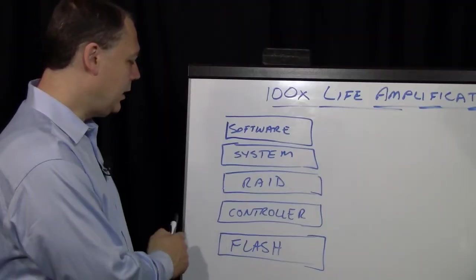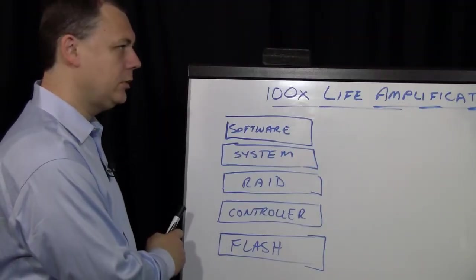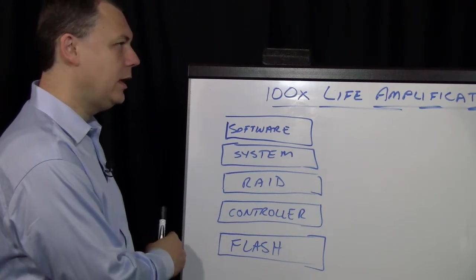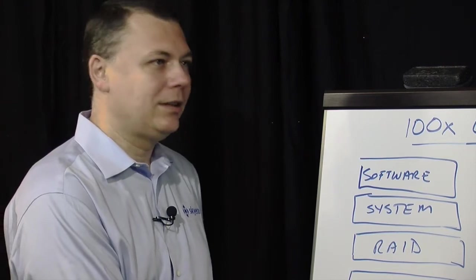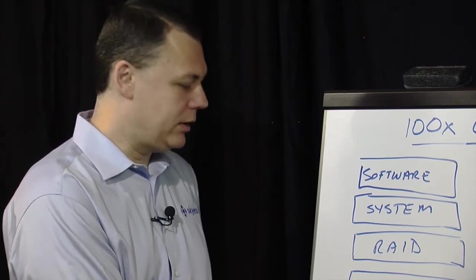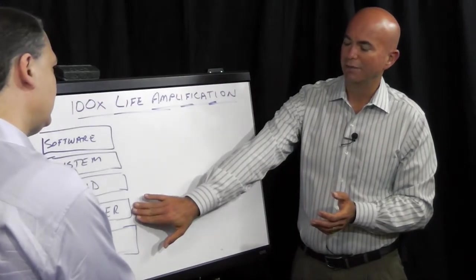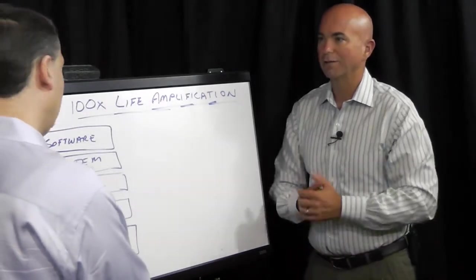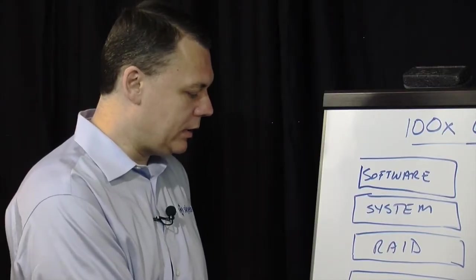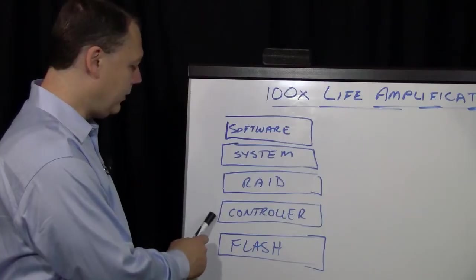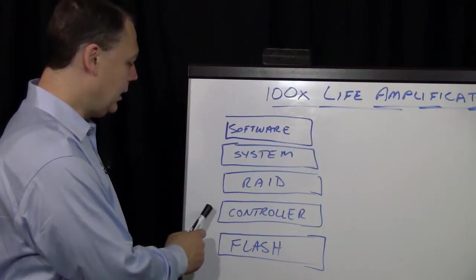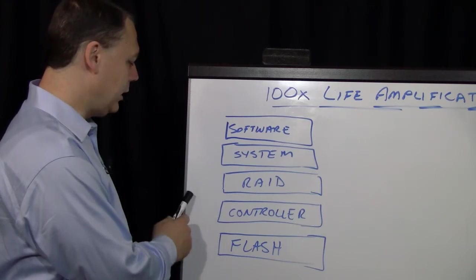And capability of controller define what kind of Flash you can use. Controllers which have been designed for 34 nanometer Flash or older, they cannot typically handle 19 nanometer Flash and so on. So this has to continually advance to keep up with the changing lithographies. Exactly. It has to be in lockstep with the Flash. Now, also the firmware written on that controller is very important.